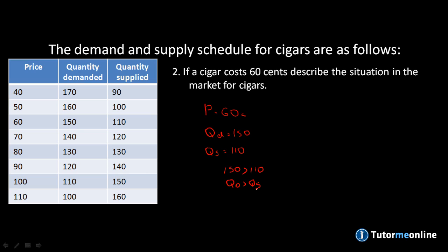This simply means we are demanding more cigars than what are actually being produced in the market, and therefore to describe the market we say there is a shortage in the market for cigars. If it was the other way around — if quantity supplied was greater than quantity demanded — the description would simply be that there is a surplus of cigars in the market.